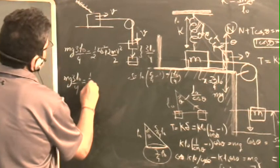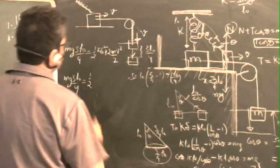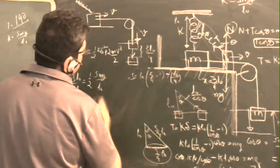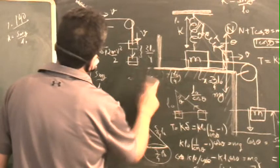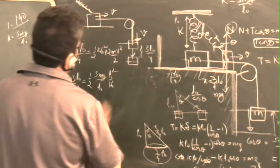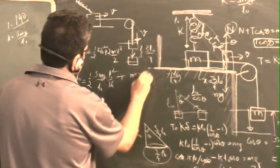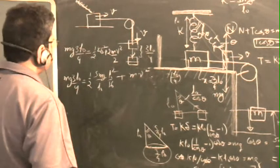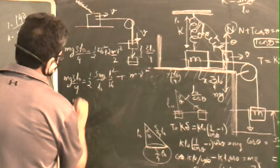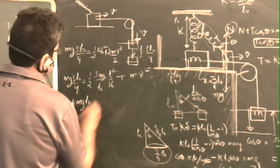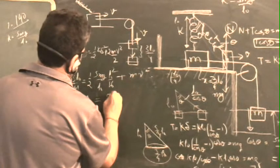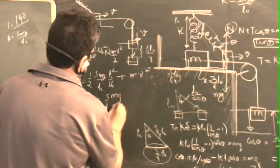Half times the value of K, which was 5mg upon L0, times delta square, which means L0 square upon 16, plus MV square. So this becomes 3 upon 4 mg L0 is equal to 5 upon 2 mg times 1 upon 16 L0 plus MV square.